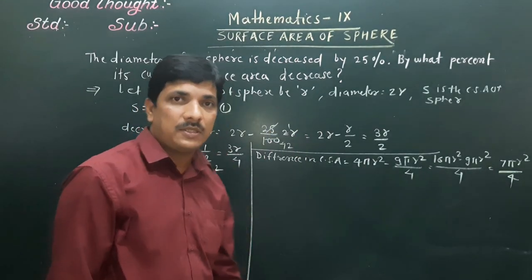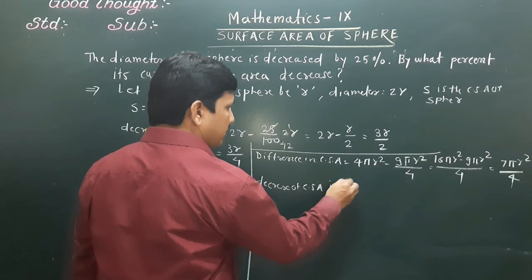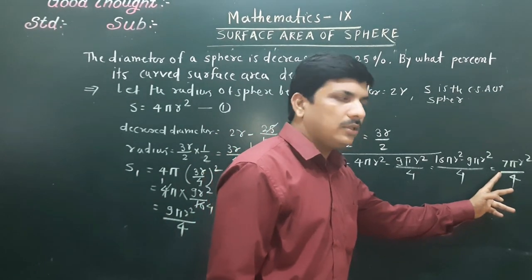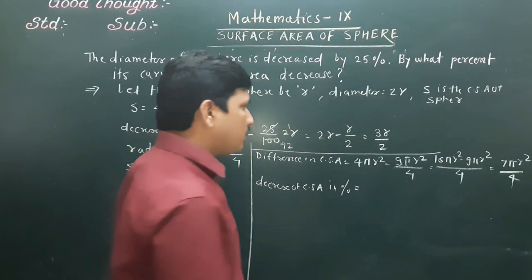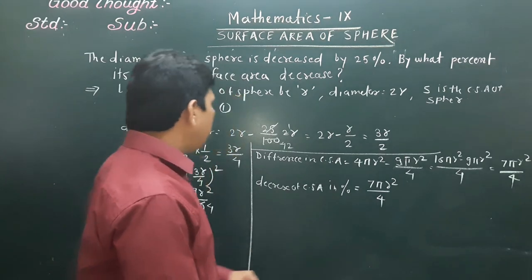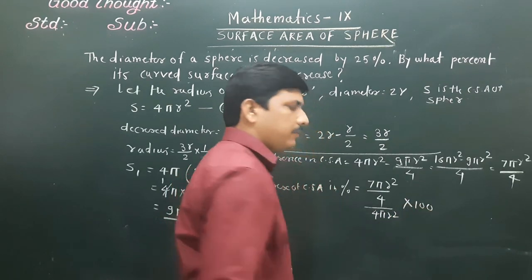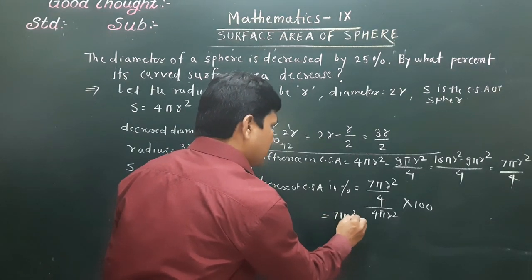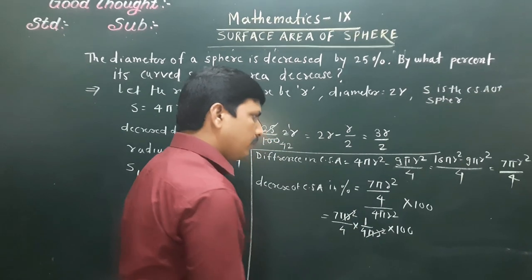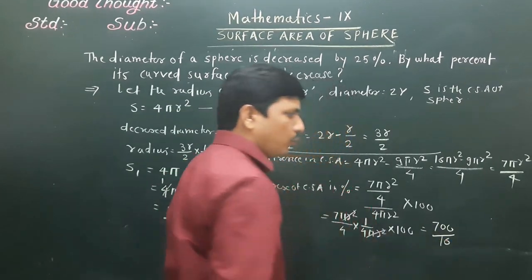Percentage decrease in CSA = (difference / original) × 100 = (7πR²/4) / (4πR²) × 100. The πR² cancels, giving 7/16 × 100 = 700/16 = 43.75%.